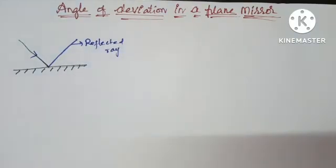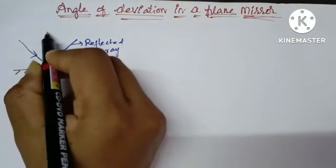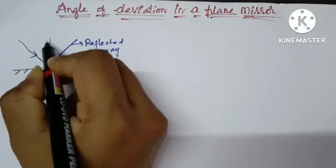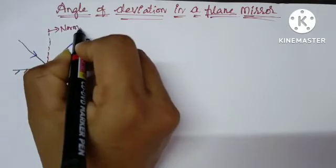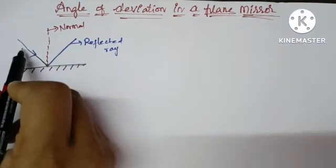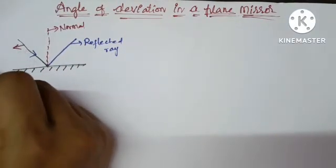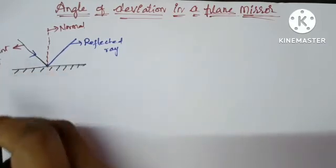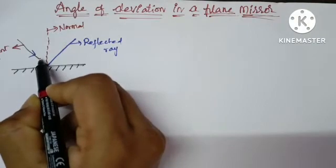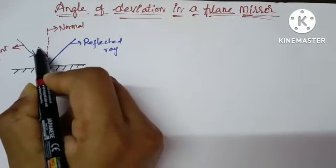Now draw a normal which is perpendicular to the plane mirror. This is called normal ray and this is called incident ray. The angle between incident ray and the normal is angle of incidence.